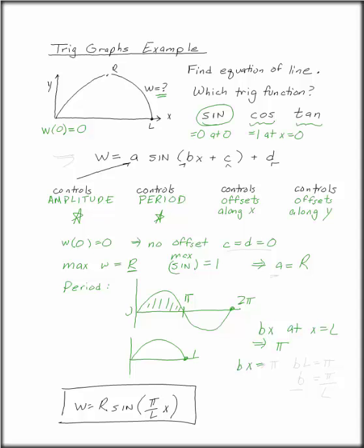Plug that b value, this a value, and these c and d values into w to get w = R sin(π/L × x).